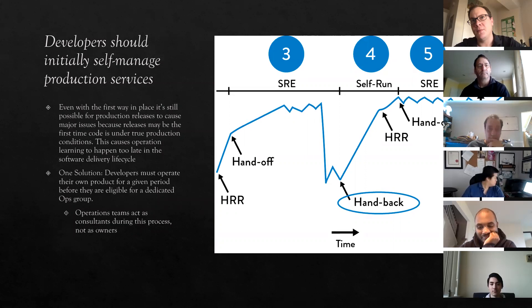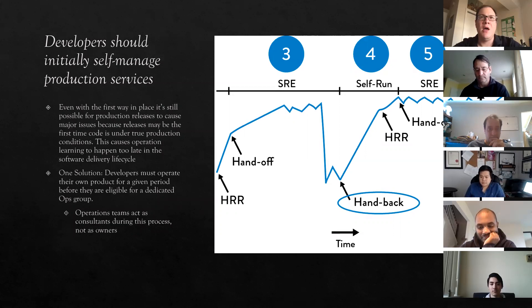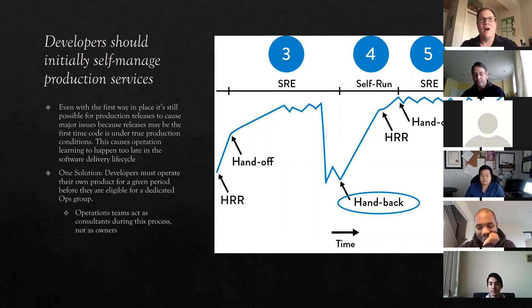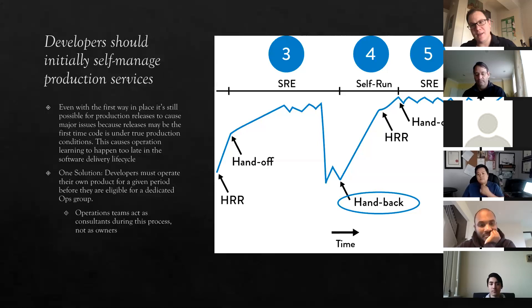This is something that's probably difficult to convince an already established organization to do, but companies like Google and Facebook are able to do it. A really interesting solution to spreading organizational knowledge and getting developers feedback on operationalizing their product is to have them manage their services in production until a fixed point before they can apply to have an operations team run it for them. Developers already need to understand how their code works — they should probably understand what kind of systems it needs to run on.